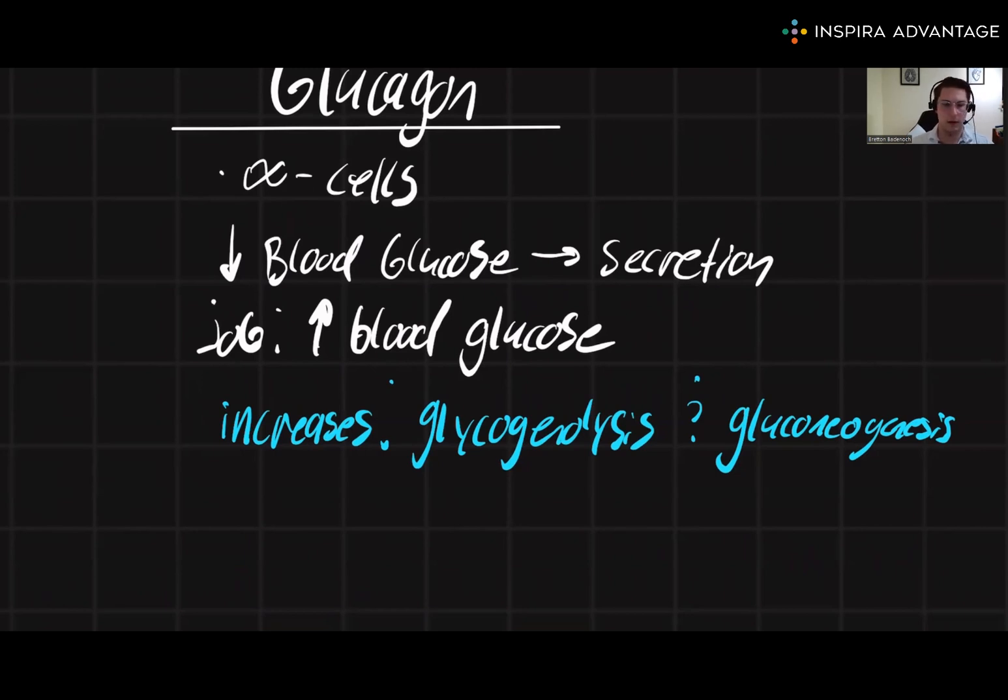On the flip side, glucagon is going to inhibit glycolysis and glycogenesis. This makes sense because we don't have excess glucose to burn in glycolysis, and if we are low on glucose, it doesn't make sense to store it in the form of glycogen.